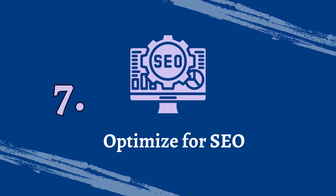Number seven, optimize for SEO. When you implement SEO best practices such as using keywords, headings, and meta descriptions, you improve your blog's search engine rankings, which then builds your audience.